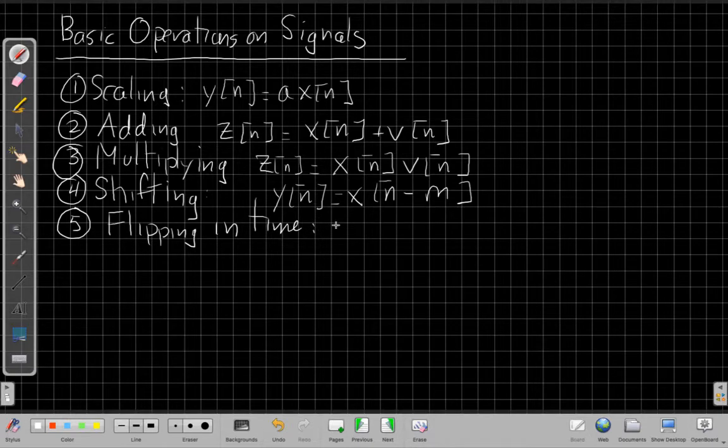And then another operation that we'll see come up when we talk about convolution in a few more videos is that y[n], if I flip something or reverse it in time, y[n] is equal to x[-n].